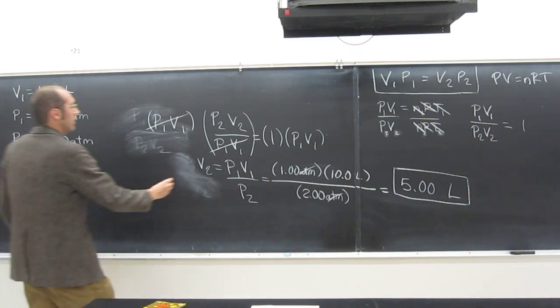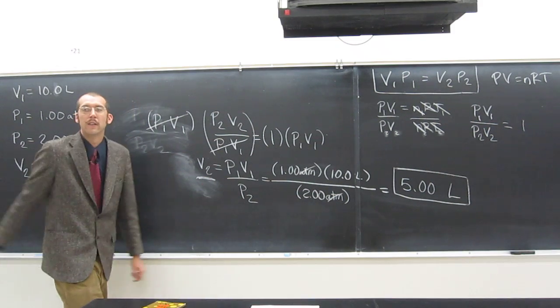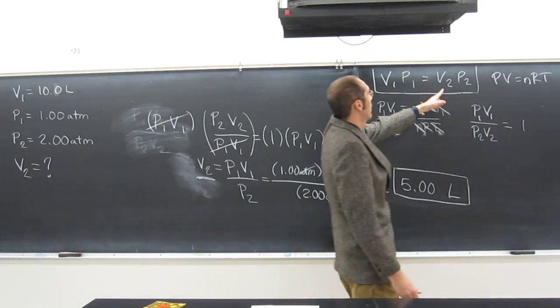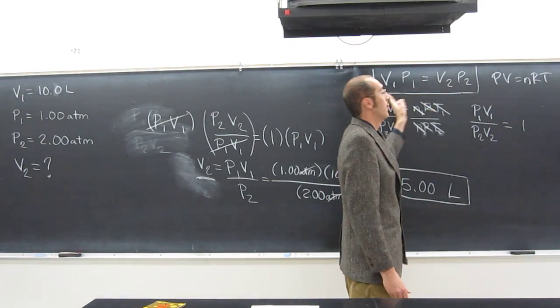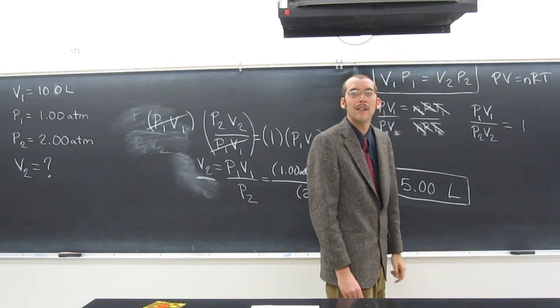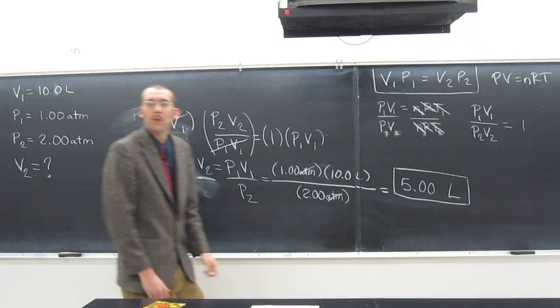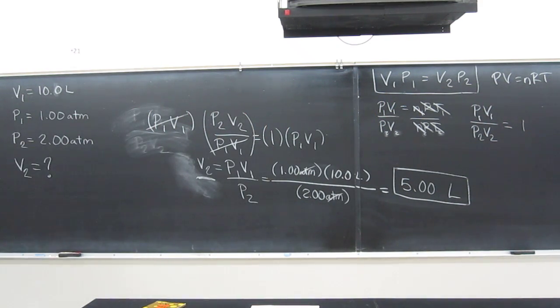you've got to isolate the variable, so, right? So if I was using this one, I'd have to divide both sides by V2, right, to isolate that variable V2. We'll do another one, okay? Let's do another one. So we'll kill it.